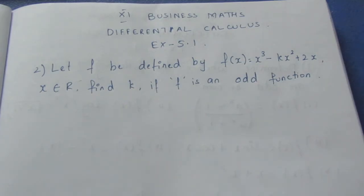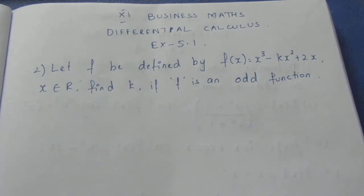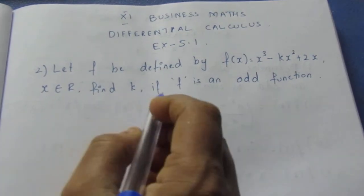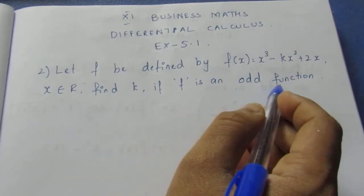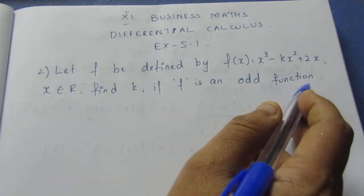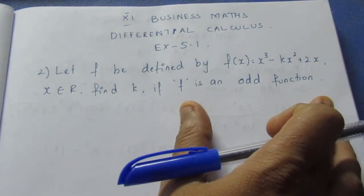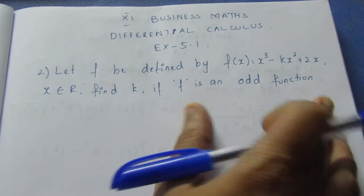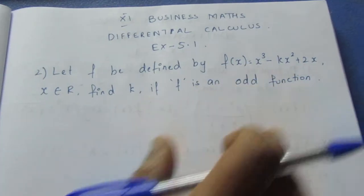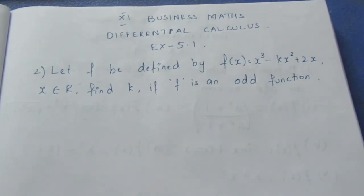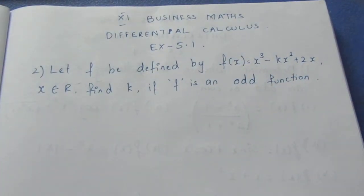Let f be defined by f(x) = x³ - kx² + 2x, where x belongs to ℝ. Find k if f is an odd function.